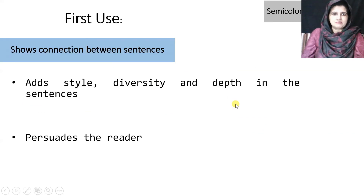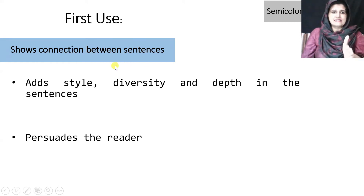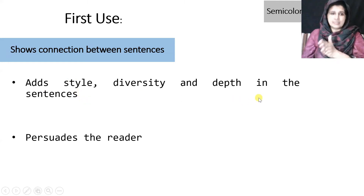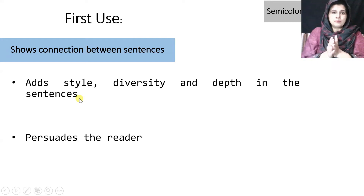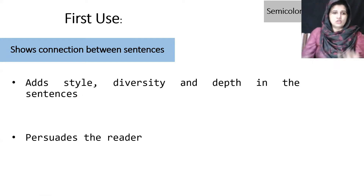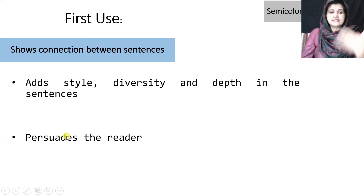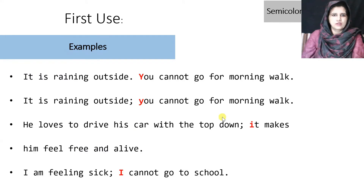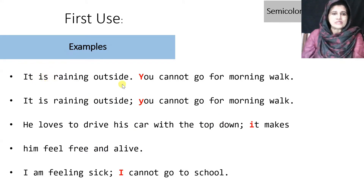The first use of semicolon is to show connection between sentences. By connecting sentences, a semicolon adds more style, diversity, and depth. Moreover, once you connect two sentences together through a semicolon, there are high chances that you will be able to persuade the reader in a better way.